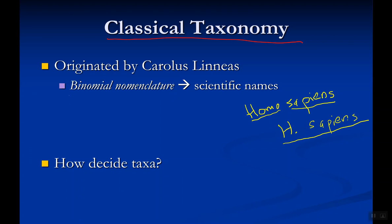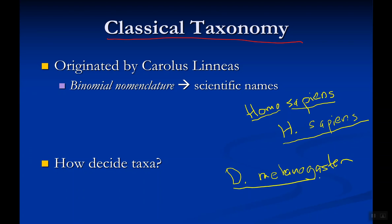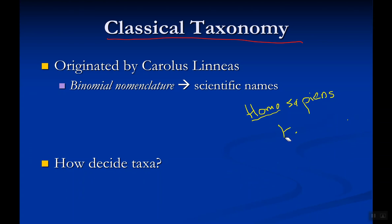The genus name must always be capitalized and the species name is never capitalized. For the rest of your scientific career you should know how to write a scientific name correctly. For example, fruit flies studied in Bio 151 are Drosophila melanogaster — Drosophila is the genus name and melanogaster is the species name, and the whole thing must be italicized or underlined.